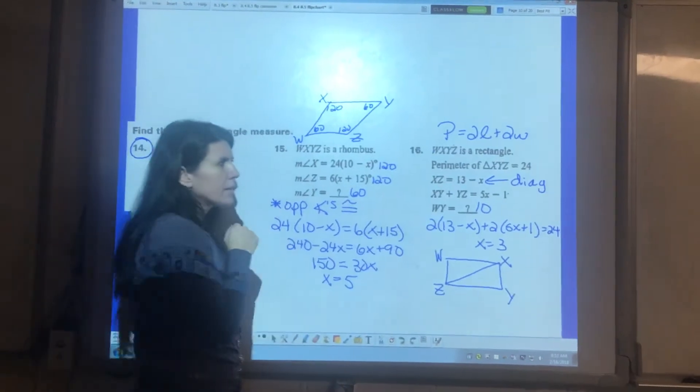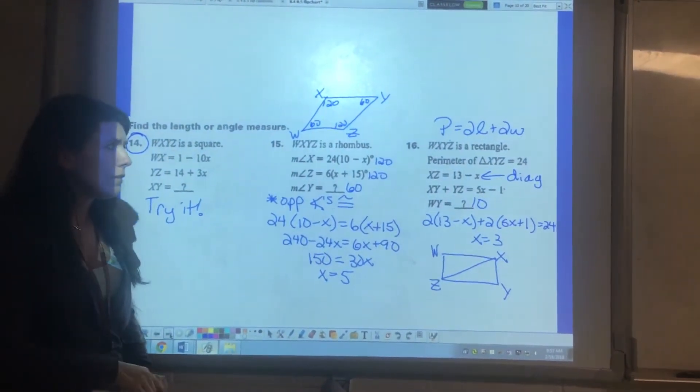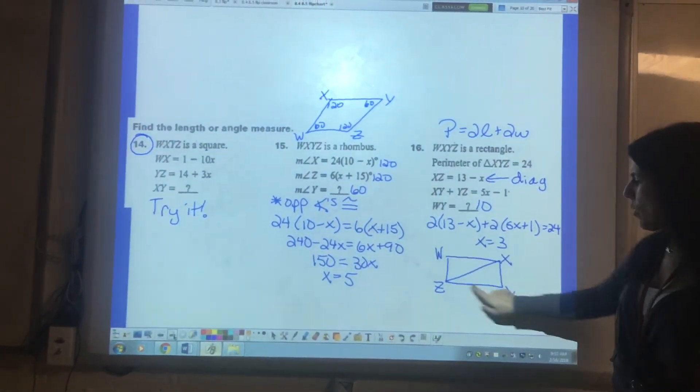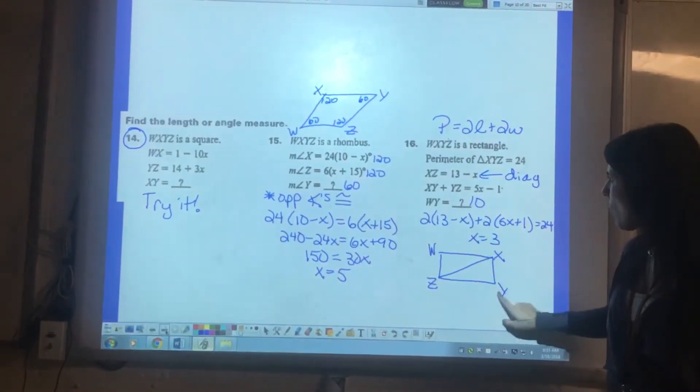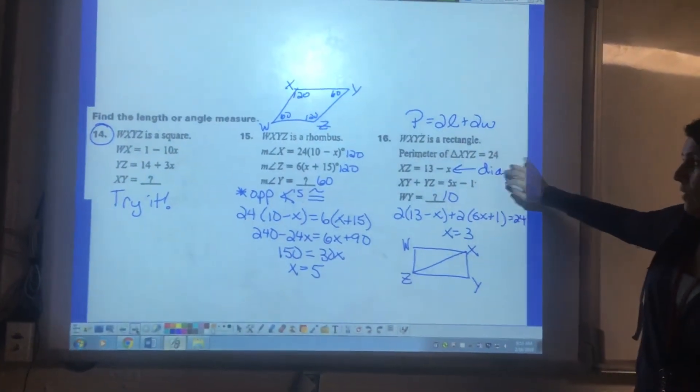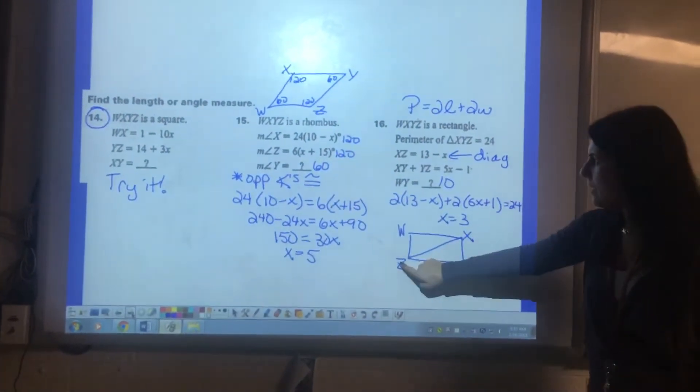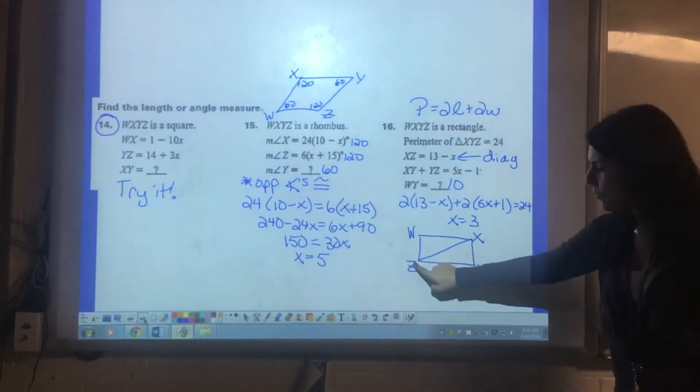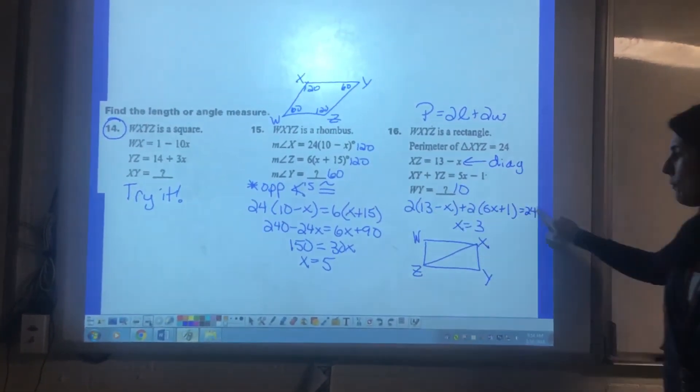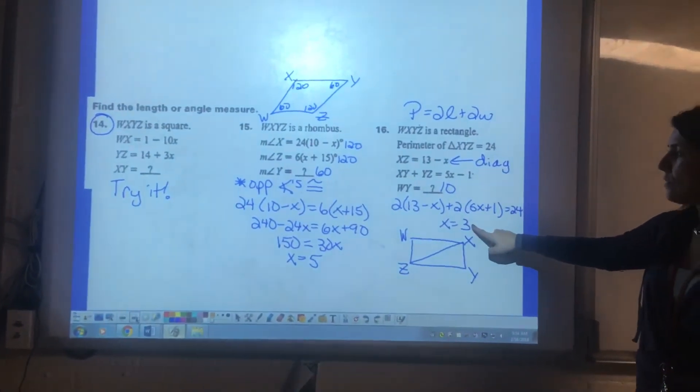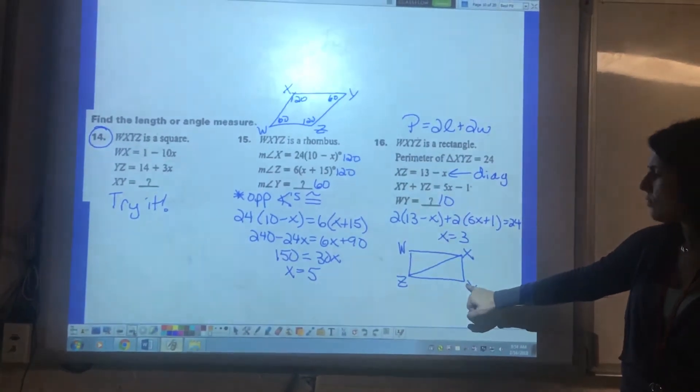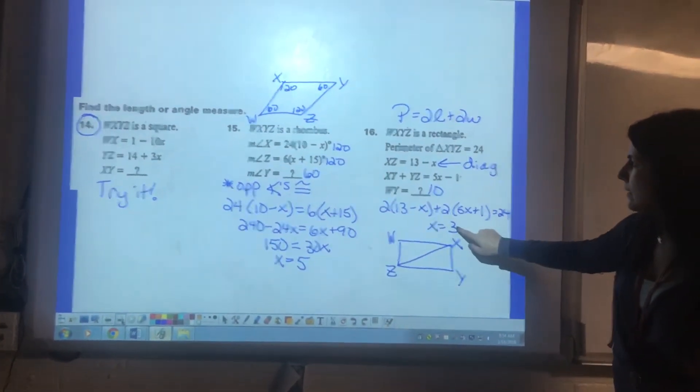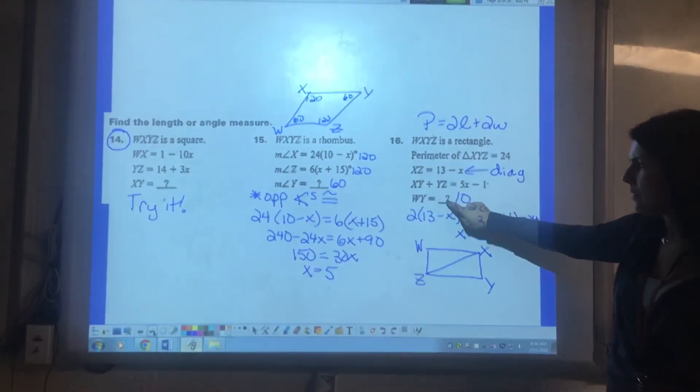Sixteen. The perimeter of a rectangle keeps coming up. If you don't know that formula make sure you know it in the future. Drawing a picture for this one I think is very important because there's lots going on here. So we have WXYZ as my rectangle. They're telling you the perimeter of XYZ is 24. Be aware of what they're giving you. They're telling you XZ which is the diagonal and then XY and YZ is here and here. They're telling you the perimeter of that triangle is 24. That's where this equation came from. When I solve it and find X is three they're asking me for WY. We know rectangle diagonals are the same. So if I can find XZ I also will know WY. When I found X is three I plug this back in and if this diagonal is ten this one is also ten.